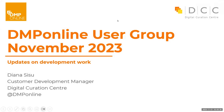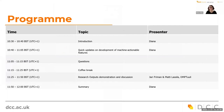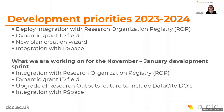Today's user group meeting will include a quick overview of where we are with development work on machine actionable features, a chance to ask questions, and a coffee break before the demonstration by Jari Freeman on their proposed feature: question IDs — not research outputs as listed by mistake.